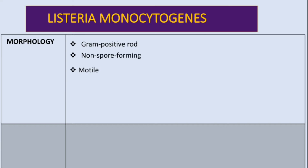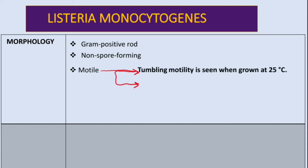It is motile. Regarding motility, we need to know two things. Outside the cells, for example in culture, it has a tumbling motility when grown at 25 degrees Celsius. This is because of flagella — at this temperature, it can form 1 to 5 flagella.